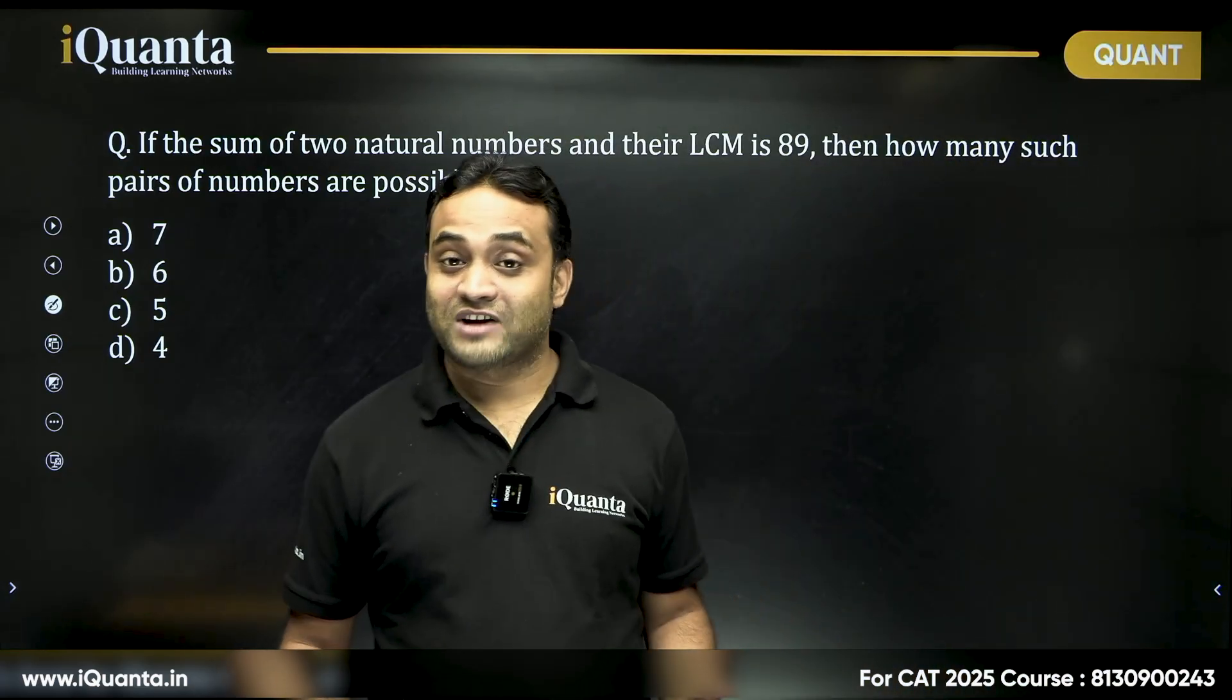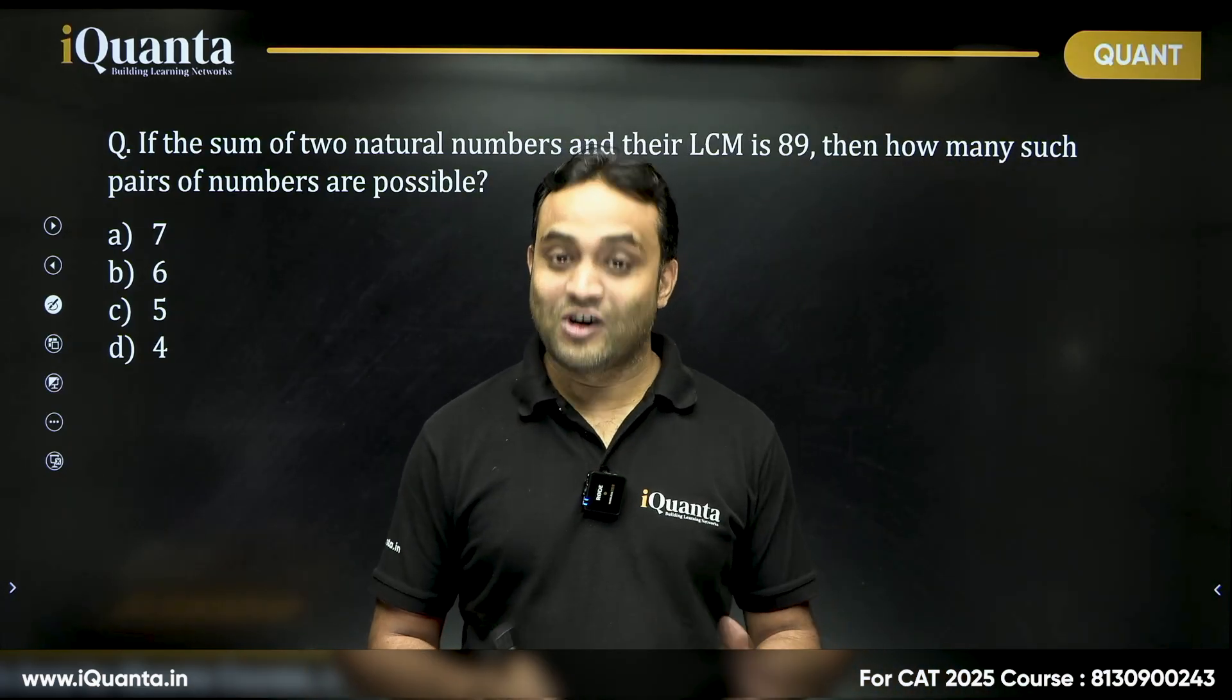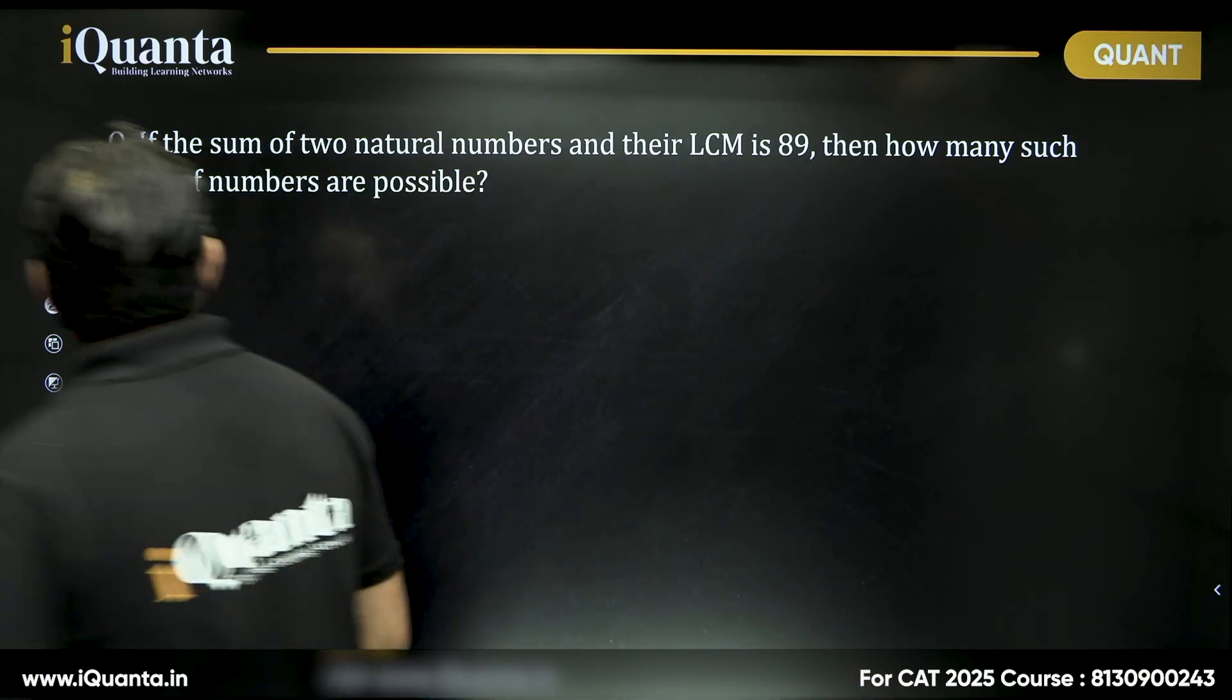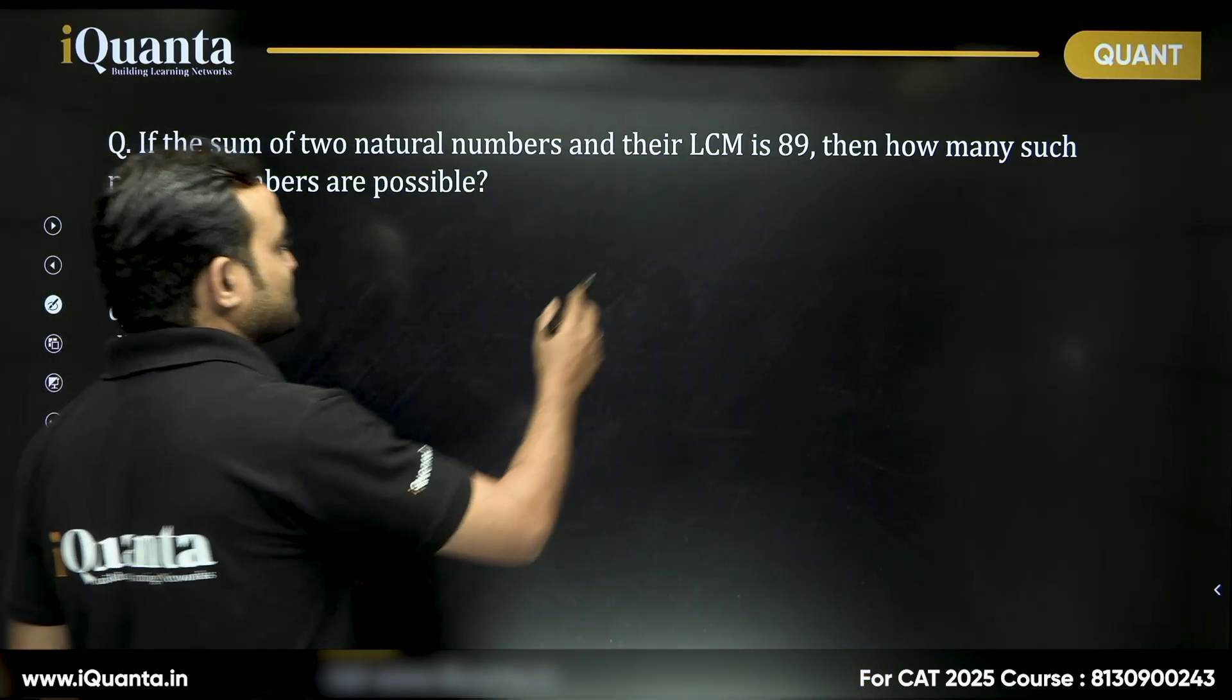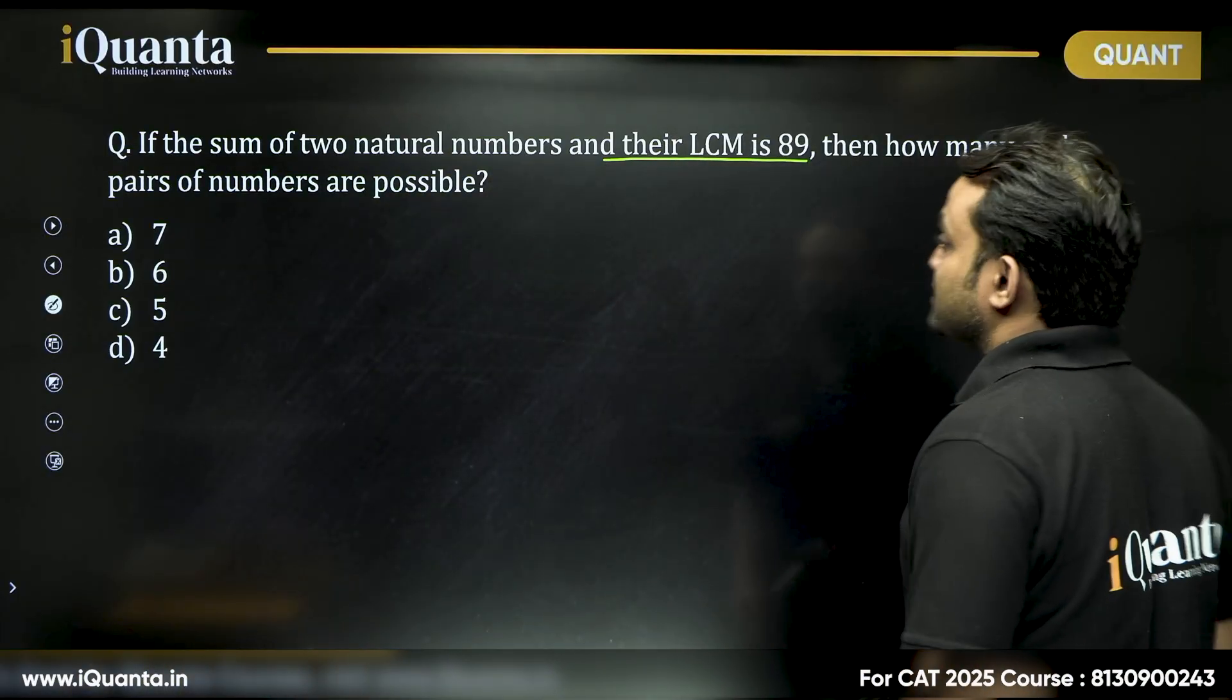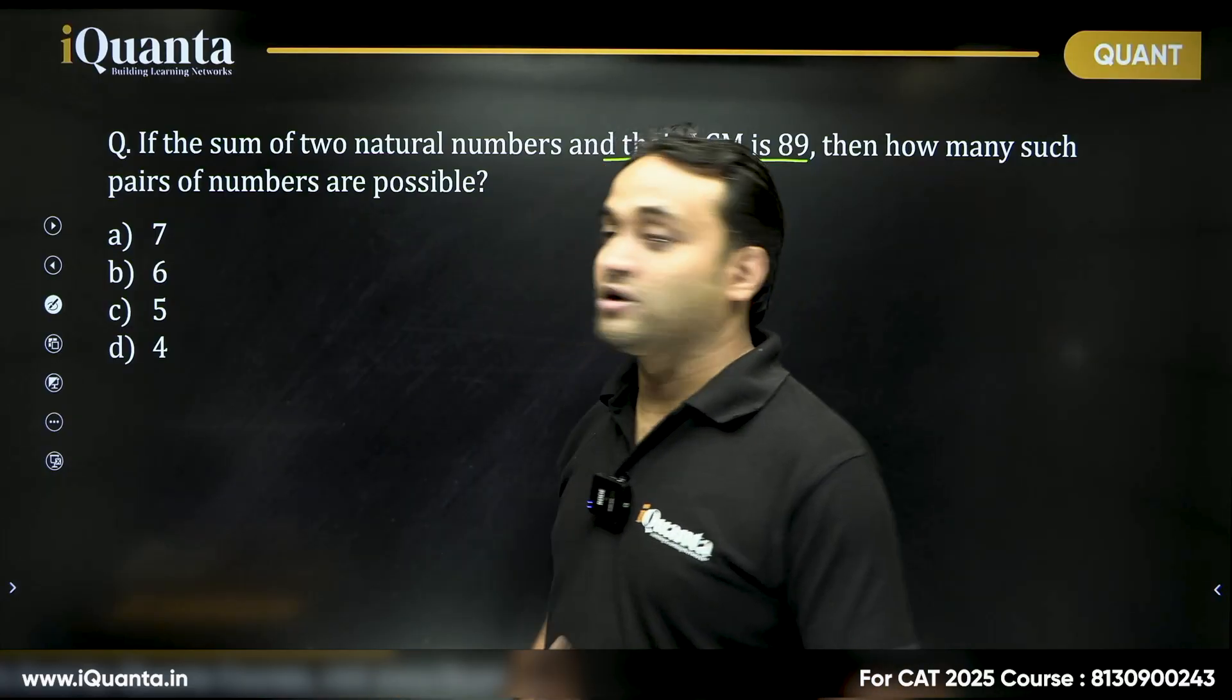I hope you tried this question and got the correct answer. Now let's discuss this. It says, if the sum of two natural numbers and their LCM is 89, then how many such pairs of numbers are possible?